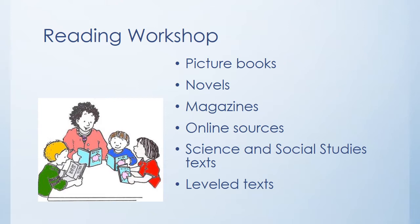Some of the texts we use during reading workshop include picture books, novels, magazines, and online sources. We also use science and social studies texts as resources to practice important literacy skills. Teachers also have access to many leveled texts which they use to provide instruction and practice with texts that students can read. The ways in which these resources are used vary by grade level. In kindergarten, teachers read aloud picture books that students may later be able to read independently in second or third grade. Students in fourth or fifth grade may read a novel together to explore how a character develops over time, or they may read different but similar novels to compare the characters.